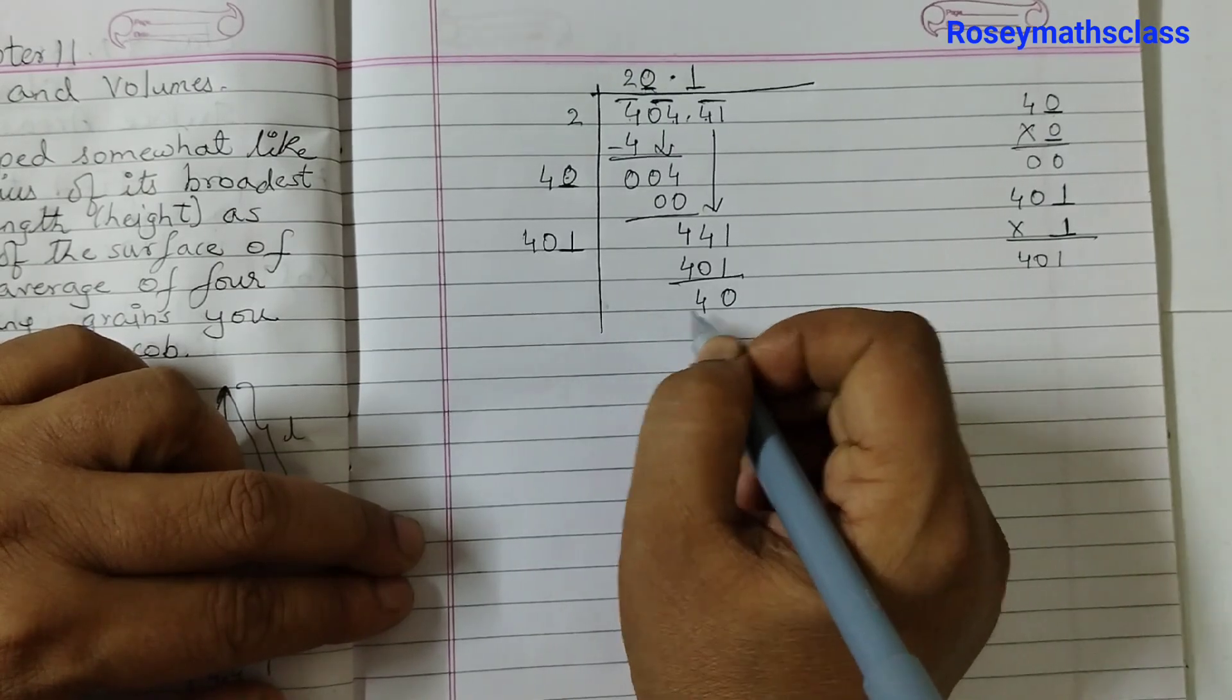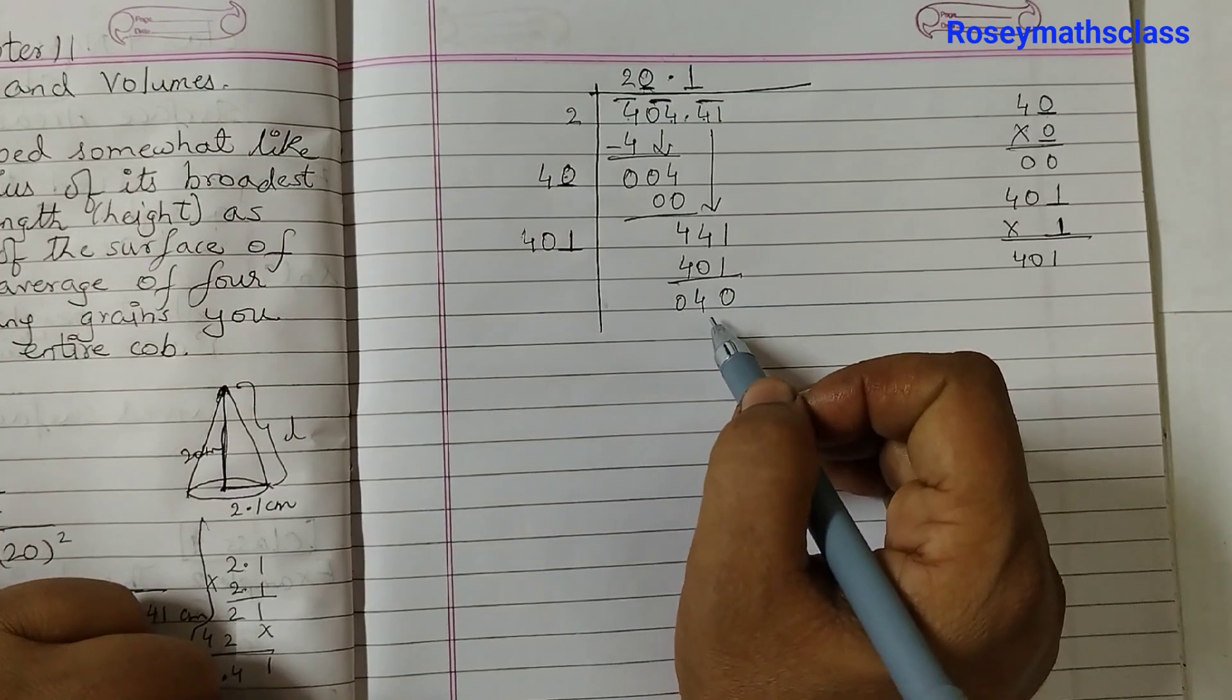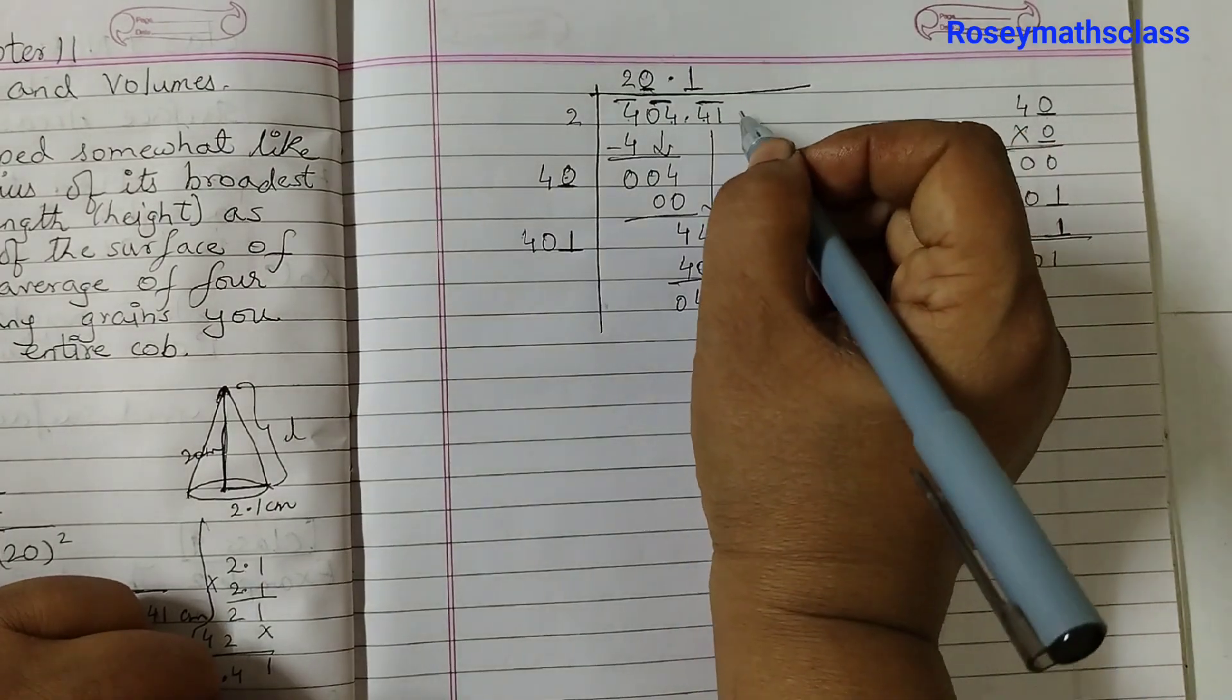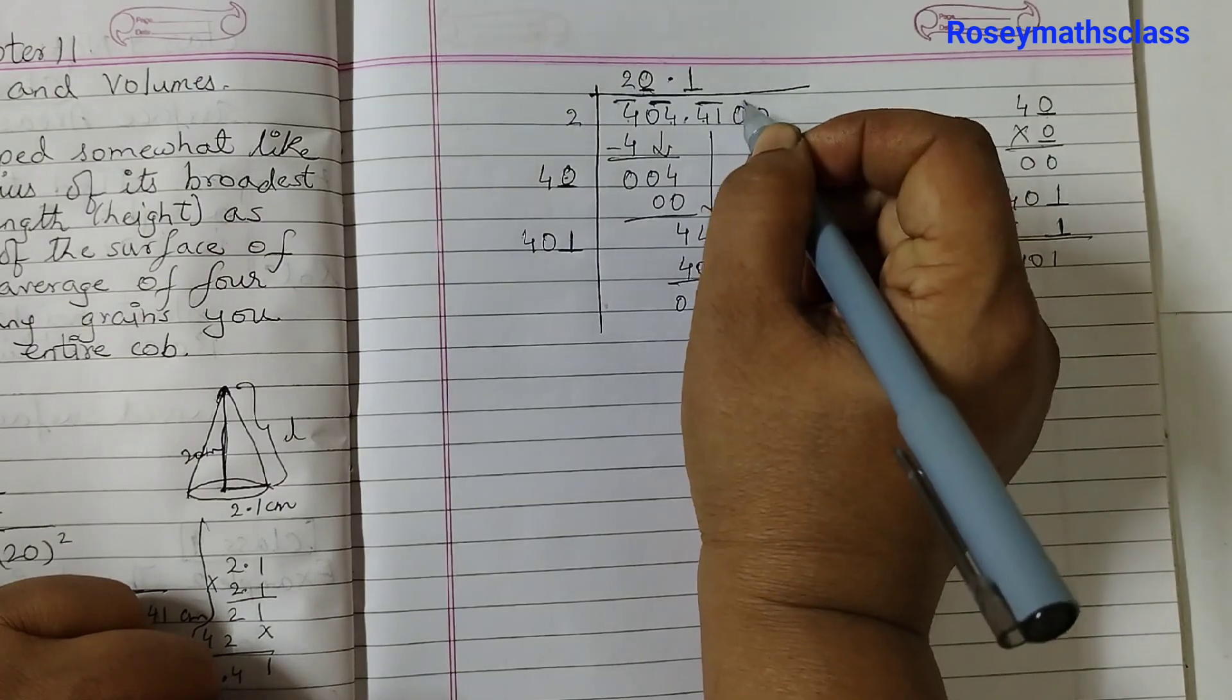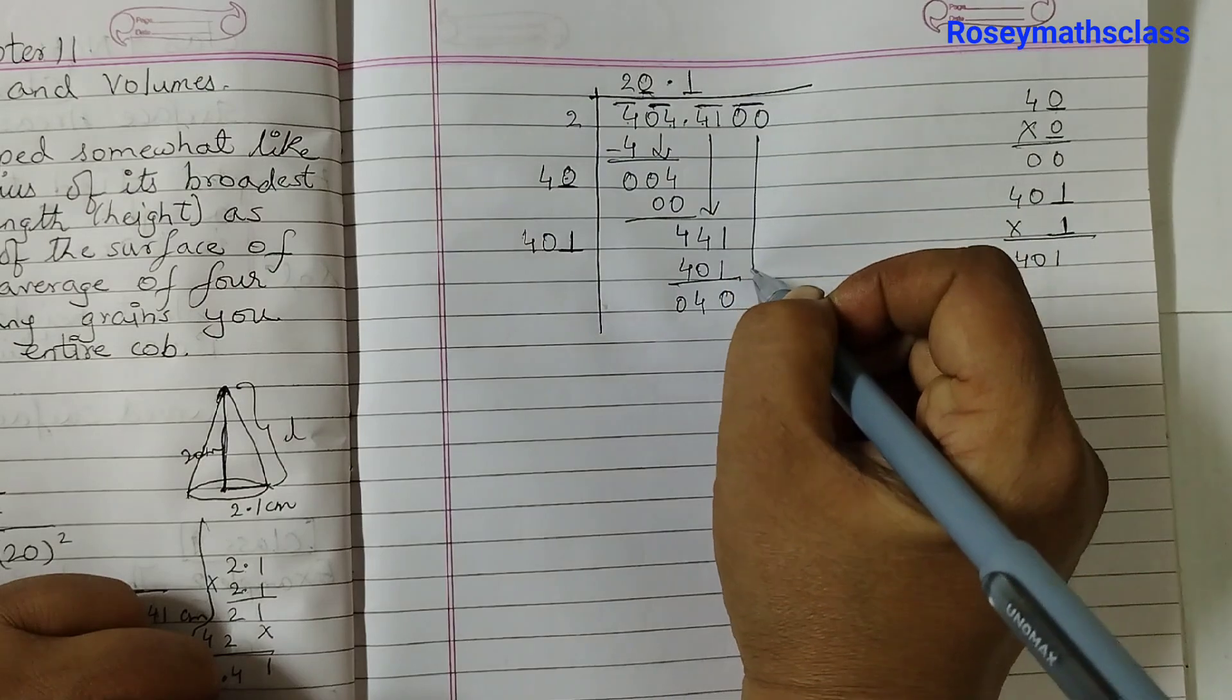Subtract 0, 4 and this is 0. Now the division is not complete because we have not got a 0 here as the remainder. So we can put 0s, however the 0s must be in pairs. So 2 zeros we put here and bring down the zeros.